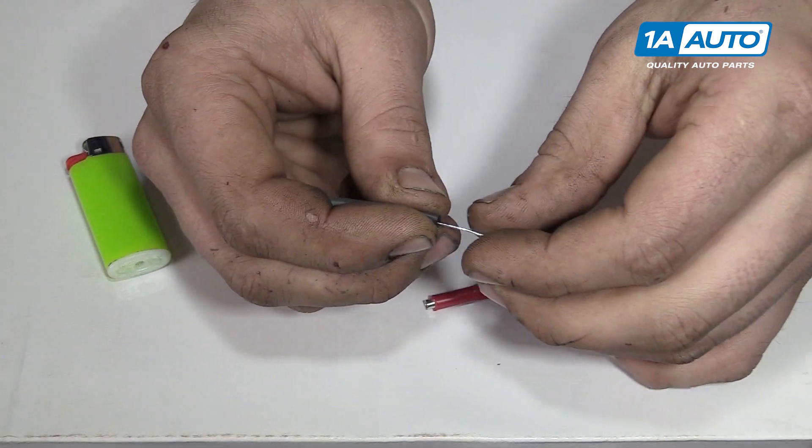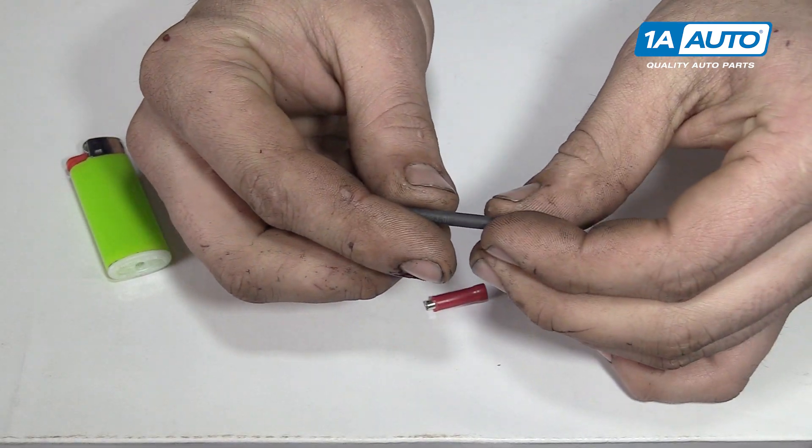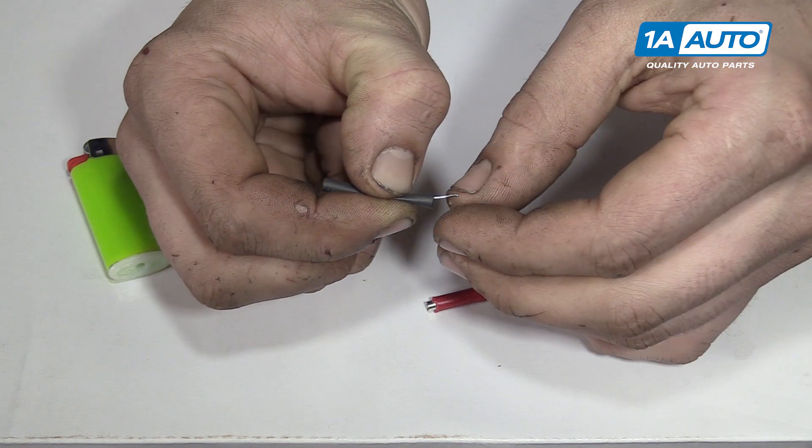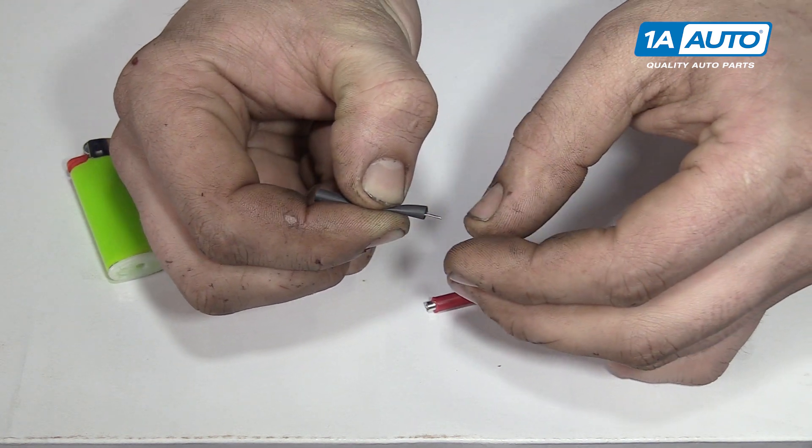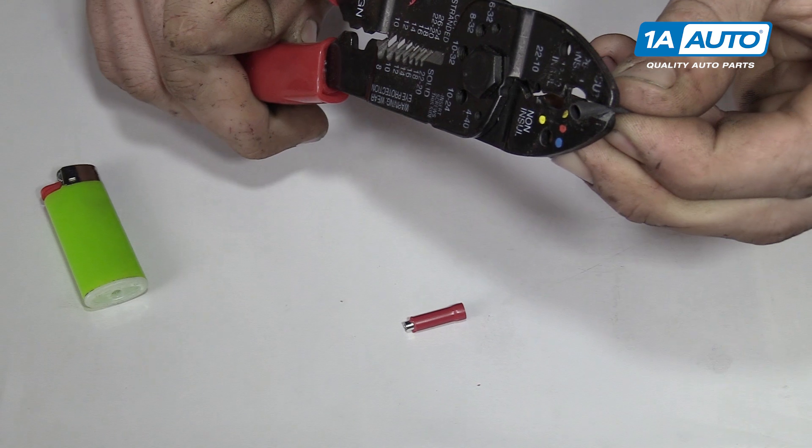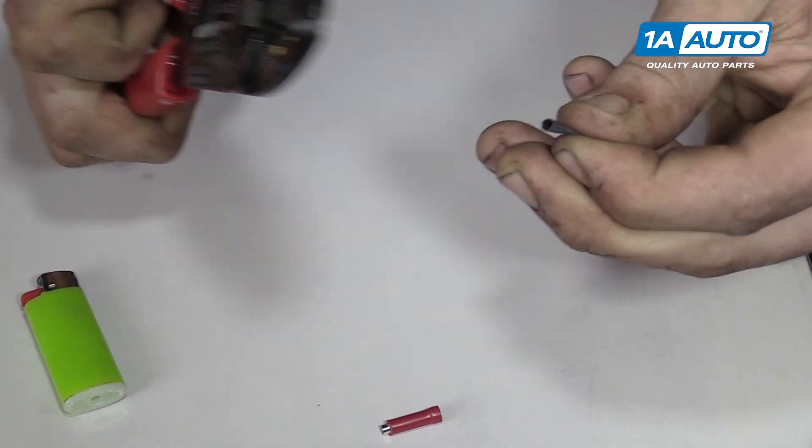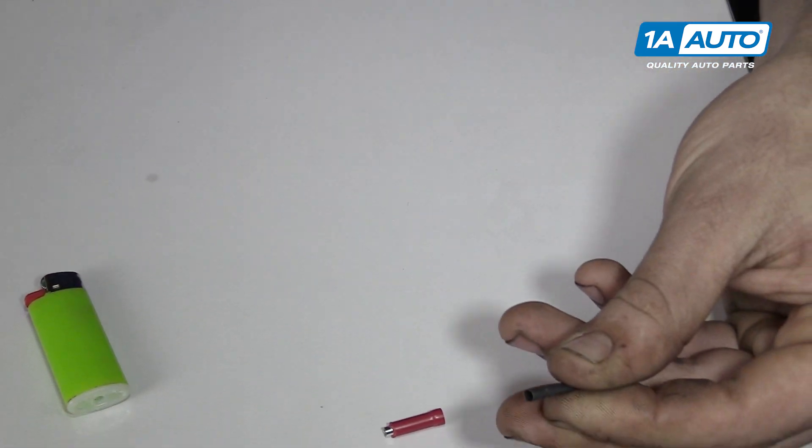Lay the heat shrink onto it. Leave just a little bit poking out the end there. Feel for where your wire ends and then cut off the shrink tube.